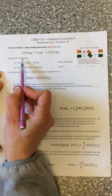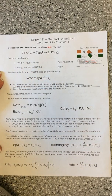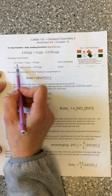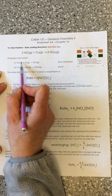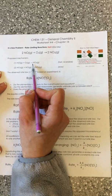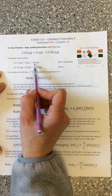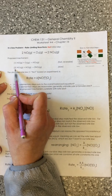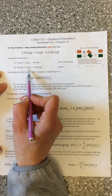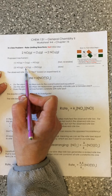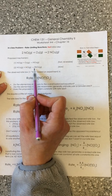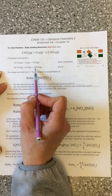Here is a proposed mechanism for how this might occur. The first elementary step: NO reacts with O2 to generate the intermediate NO3. In the second elementary step, that intermediate NO3 is used up by reacting with the second molecule of NO to generate the two product molecules of NO2.